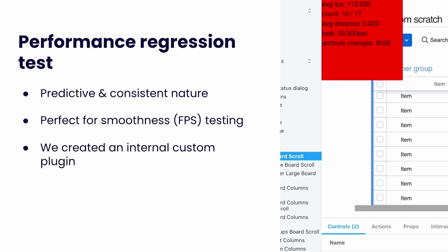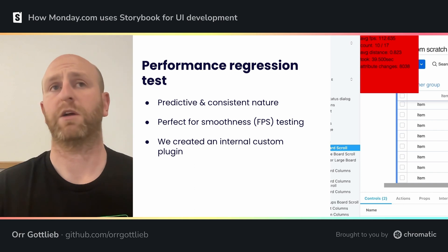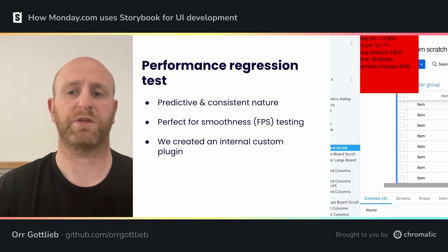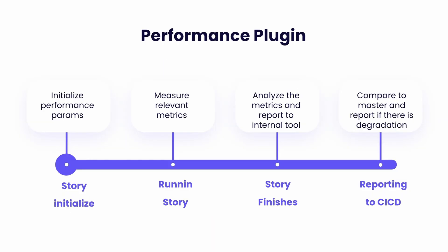The cherry on top is that we use Storybook to monitor performance regressions, like frames per second. Testing performance requires a predictive and consistent environment, which Storybook is perfect for. When the story initializes, we read the specific performance metrics we want to measure. When the story runs, we measure them. When the story finishes, we collect and analyze all the data and send it to our internal tools. During CI/CD, we compare the results to master, and if the results vary by a specific amount, we fail the CI — meaning we've just prevented a performance hit on our product.